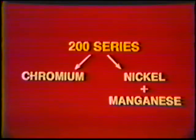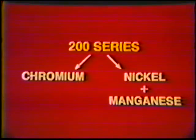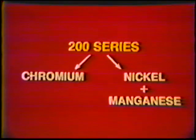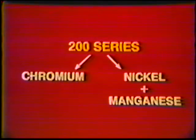A limited number of 200 series stainless steels exist. This series substitutes manganese for some of the nickel found in the 300 series, making the steel less expensive. The 300 series filler metals are used to weld these stainless steels.